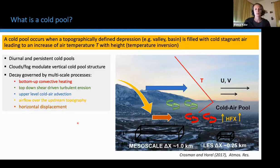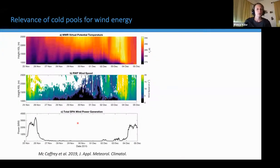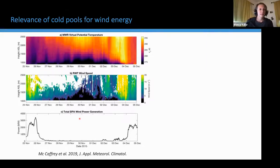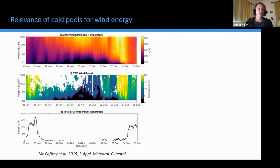Cold pools can also lead to a horizontal displacement. They are highly relevant for wind energy forecasting because wind in cold pools is usually light and variable, and then it rapidly accelerates during cold pool decay. This is shown here in an example from the Columbia River Basin. The top panel shows a time-height section of temperature, the middle panel shows horizontal wind speed, and the bottom panel shows wind power generated in the area. During the cold pool, horizontal wind speed was close to zero, and there was basically no wind power generation.